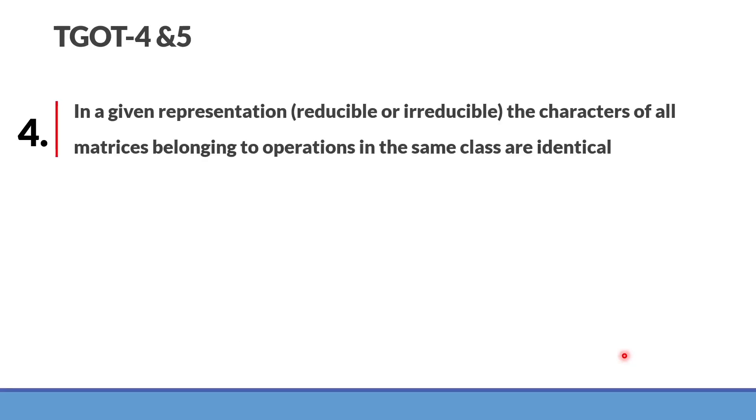Rules number four and five are fairly simple. Rule number four says that in a given representation, the characters of all matrices belonging to the operation in the same class are same or identical.